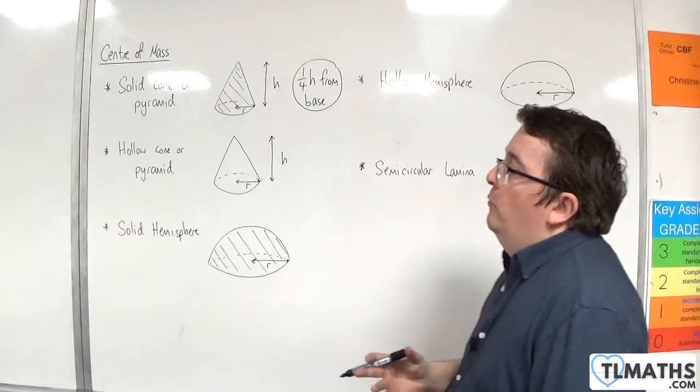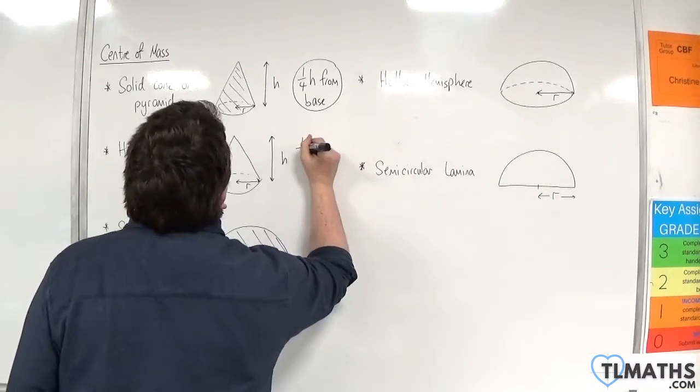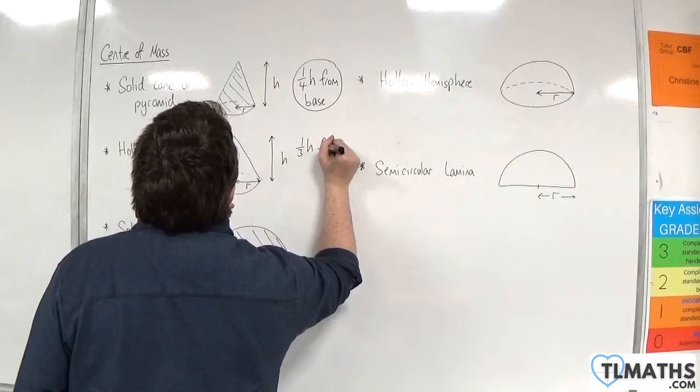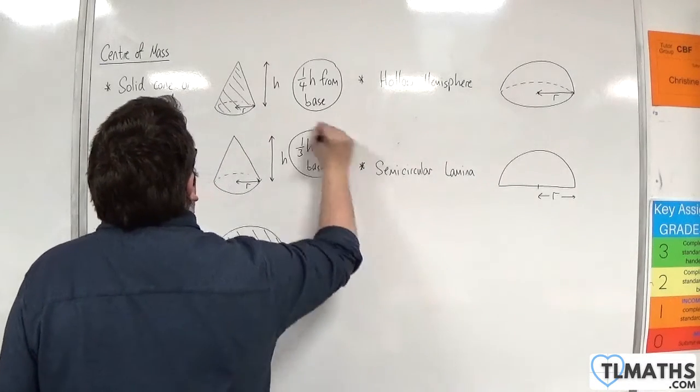If the cone or pyramid is hollow, then it's not one quarter H, it's one third H from the base.